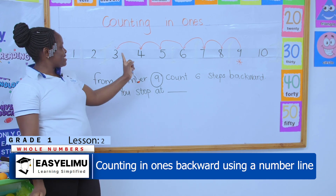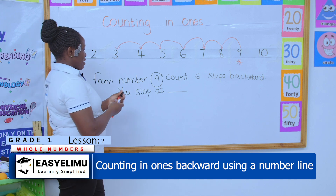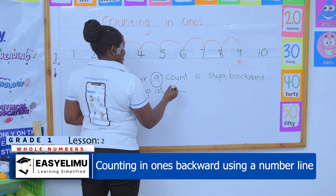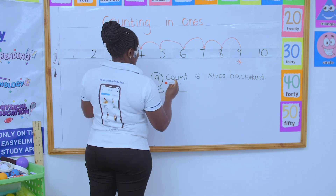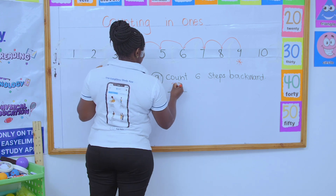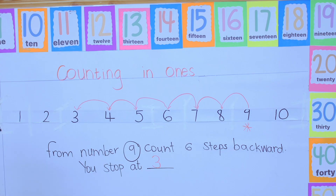You stopped at three! So from number nine, count six steps backward — the teacher stops at three. Very good. Now the same type of question: from number seven, count four steps backward.